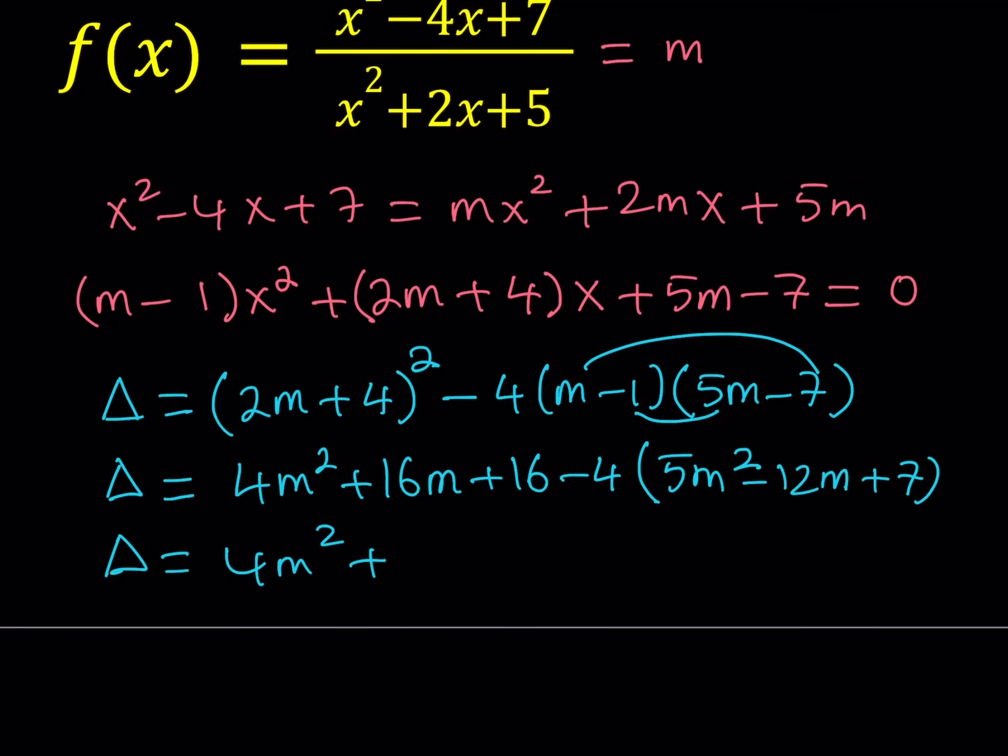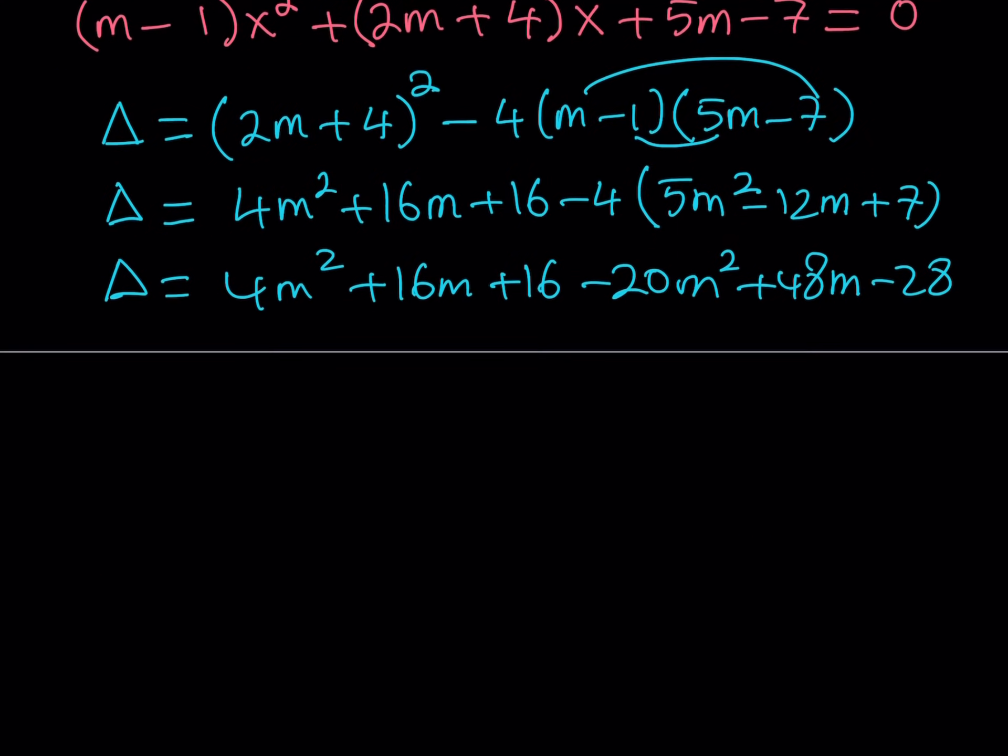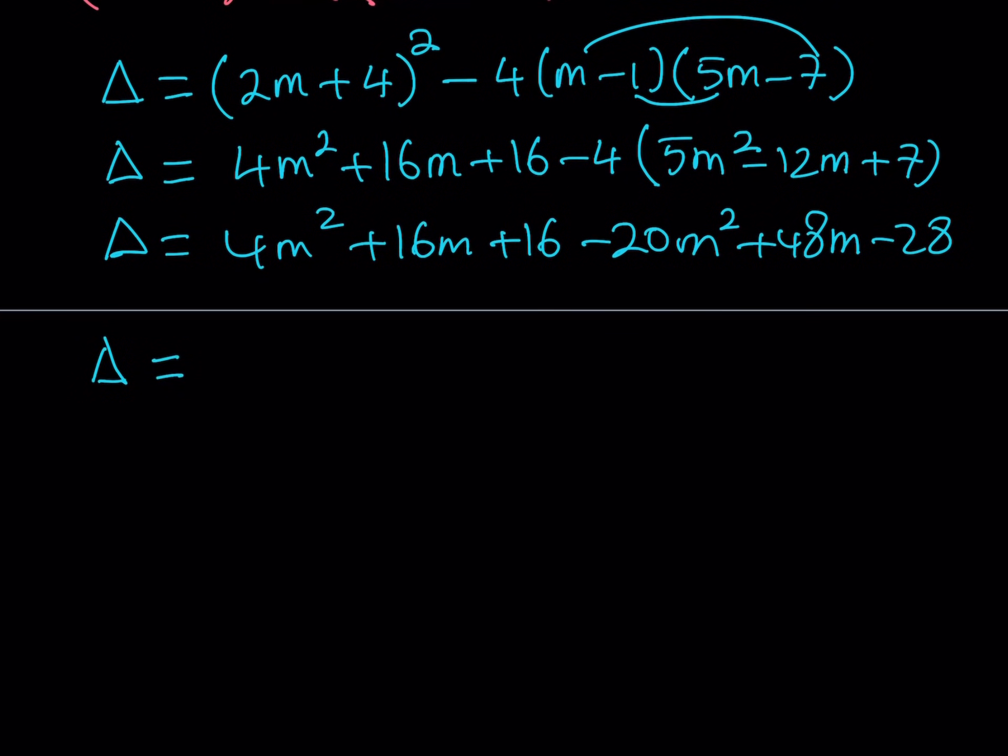4m squared plus 16m plus 16. And then I get negative 20m squared plus 48m minus 28. Let's go ahead and combine like terms and write our equation for the discriminant.